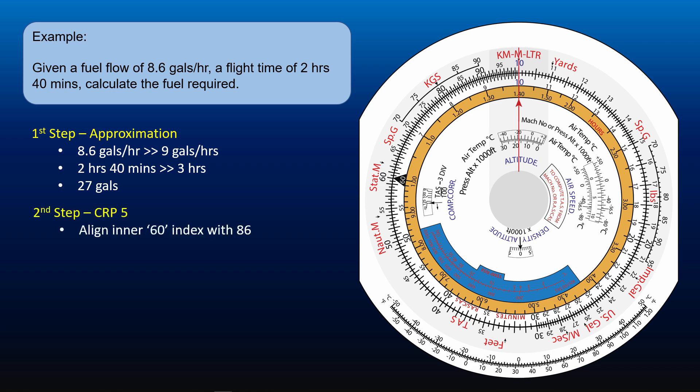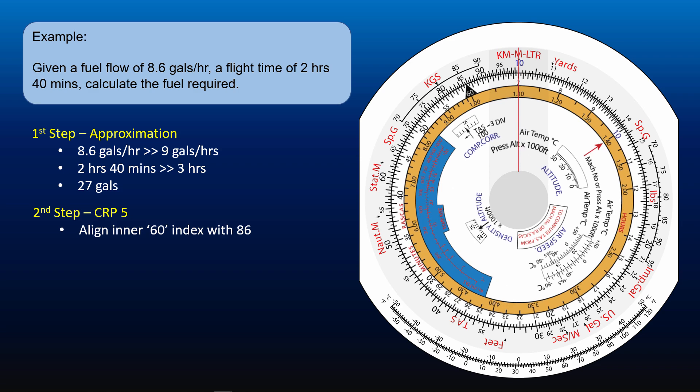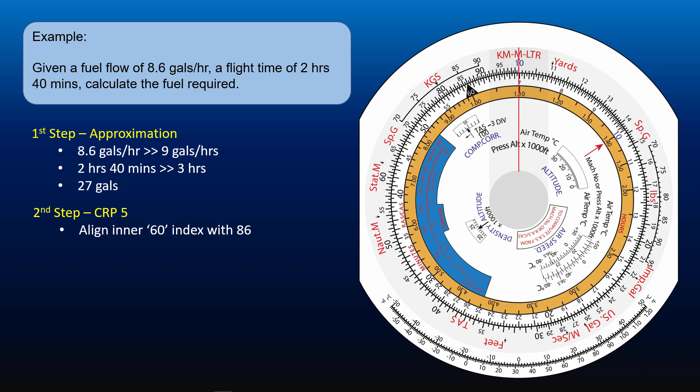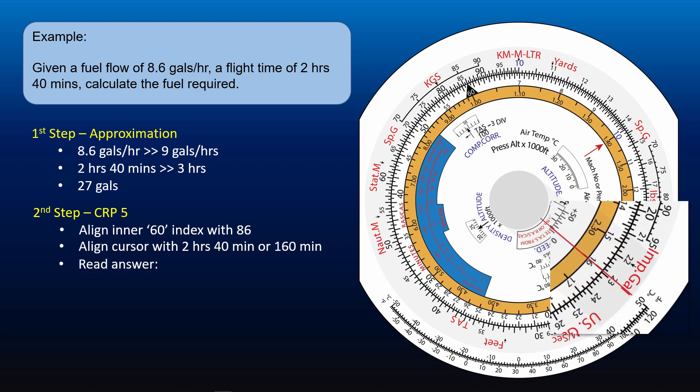Align the 60 index with 86, representing 86 gallons per hour on the outer scale. Next, align the cursor with 2 hours 40 minutes on the orange scale, or 160 minutes on the inner scale. Read the answer on the outer scale: 22.9. Our approximate figure tells us that the correct answer must be 22.9 gallons.